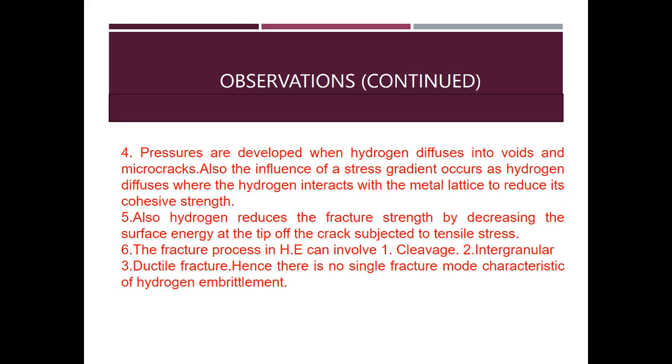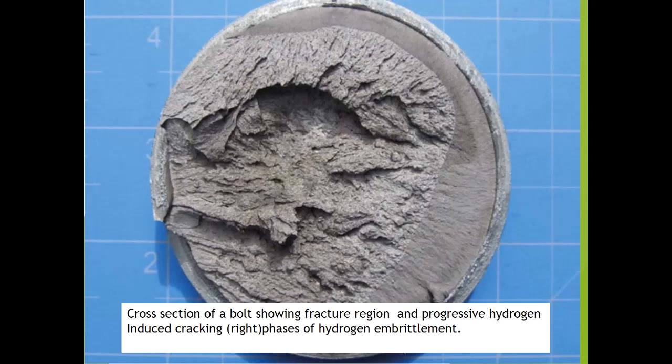Hence, the most important point is that there is no single fracture mode characteristic of hydrogen embrittlement. The macrostructure of the fractograph of a cross-section shows the fracture region and progressive hydrogen-induced cracking along the right side. The dark gray colored area shows the hydrogen embrittlement.